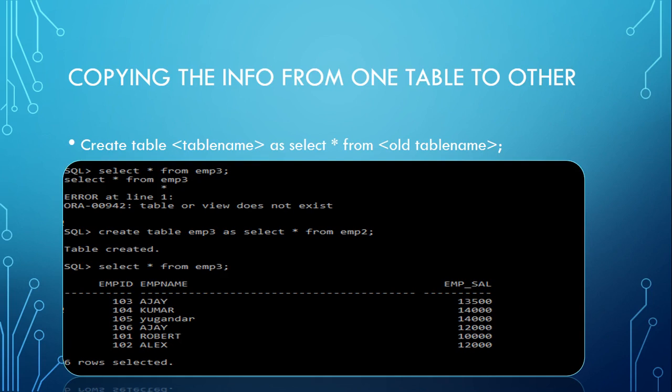Normally, if you want to copy a record from one table to another table, it should either have the same structure or it should match with some fields. Assuming I wanted to create a new table which is the same as the old one — with the same fields, properties, and everything.